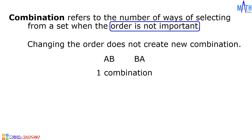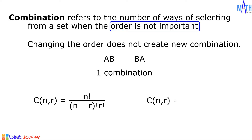In evaluating the combination of n objects taken r at a time, we will be using n factorial over the quantity n minus r factorial times r factorial. Or, permutation of n objects taken r at a time over r factorial.